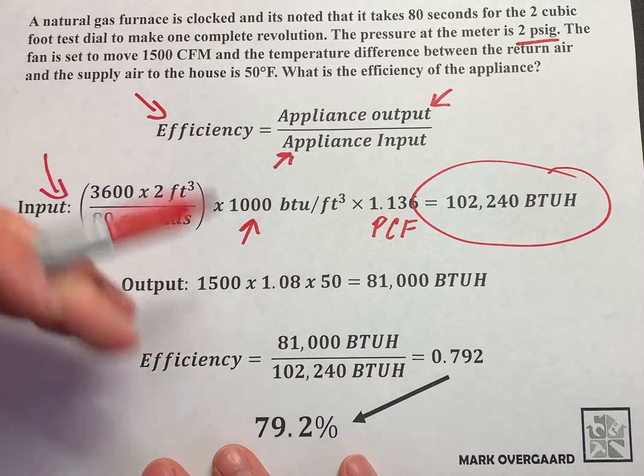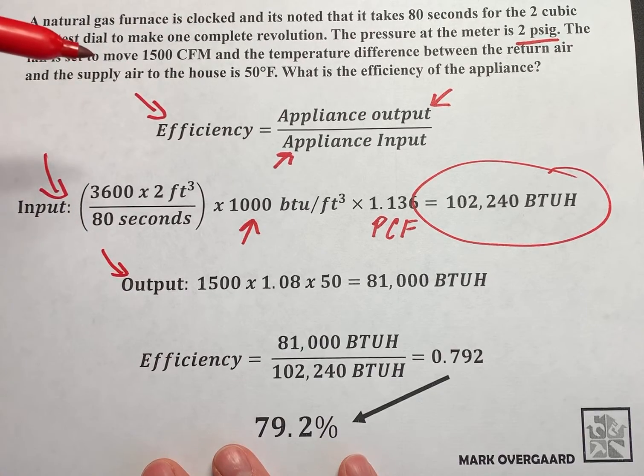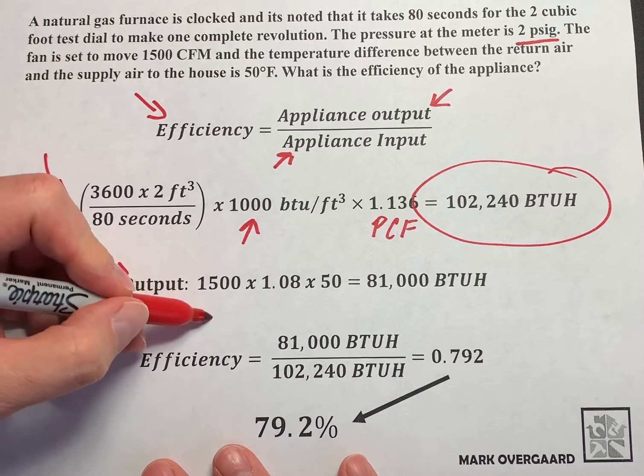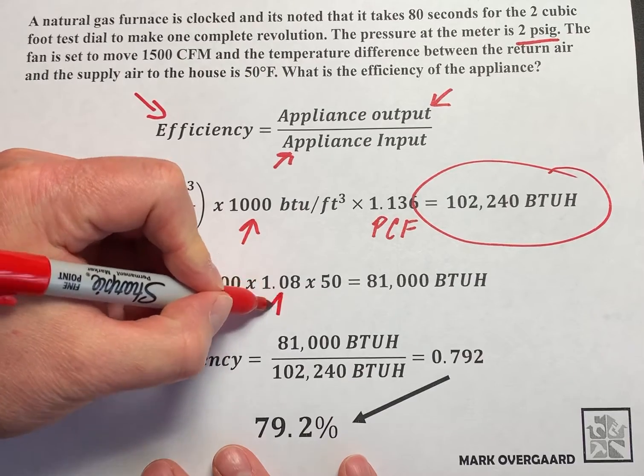Now we got to figure out how much we get out. That's your output formula. This is based on the fan pushing the air into the house. So the cubic feet per minute is 1500. Now this 1.08, it's a constant.